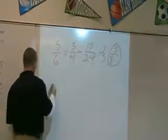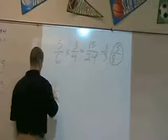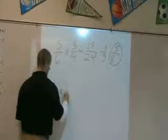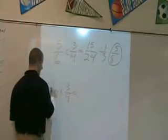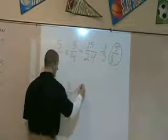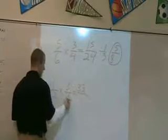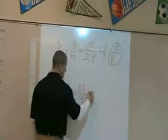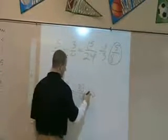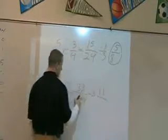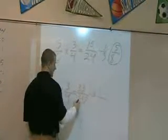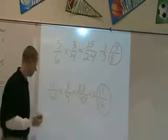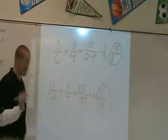Let's do one more example of multiplying fractions: eleven-twelfths times three-fourths. Eleven times three is thirty-three. Twelve times four is forty-eight. Can this be reduced? Yes — both are divisible by three. Three goes into thirty-three eleven times, and three goes into forty-eight sixteen times. The answer is eleven over sixteen. So multiplying fractions is the easiest operation.